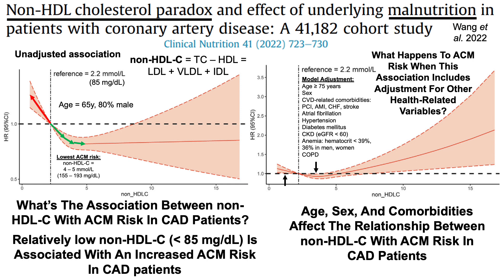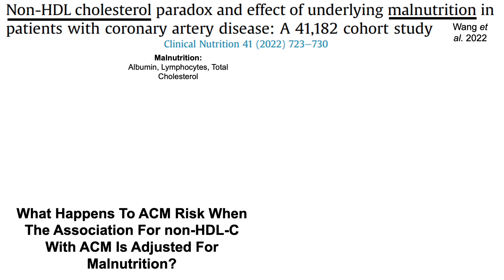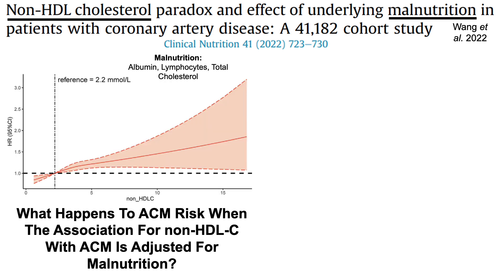The title of this paper includes malnutrition. How does malnutrition contribute to the association for non-HDL cholesterol with all-cause mortality risk? They defined malnutrition using blood test data for albumin, lymphocytes, and total cholesterol. As a quick aside: because total cholesterol includes non-HDL cholesterol, the only other component not included is HDL — so by including total cholesterol in these models, it's essentially accounting for HDL. So what happens to all-cause mortality risk when the association for non-HDL cholesterol is adjusted for malnutrition as defined by these three factors?